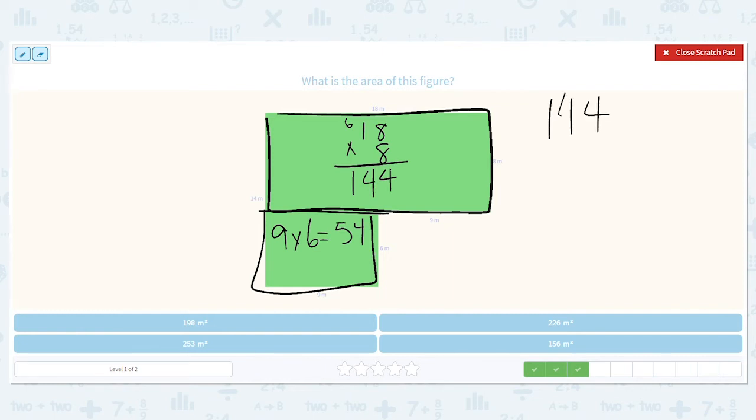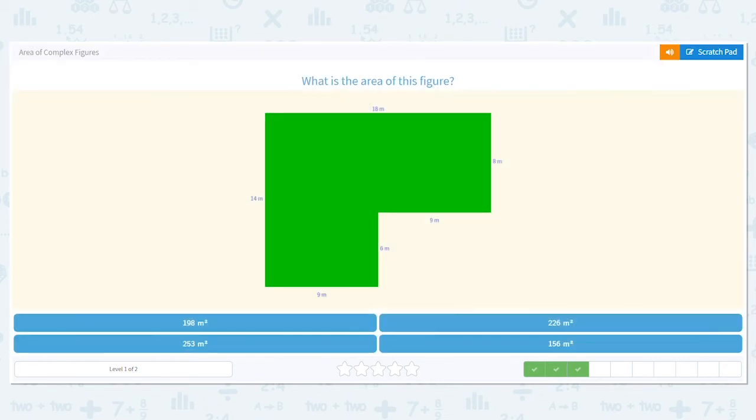So I need to add 144 and 54. 4 plus 4 is 8, 4 plus 5 is 9, and 1 plus nothing is 1, so 198 meters squared.